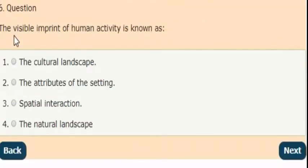Next question: the visible imprint of human activity is known as. Options are: the cultural landscape, second, the attributes of the setting, third, spatial interaction, and fourth, the natural landscape. The correct answer is option 1: the cultural landscape.